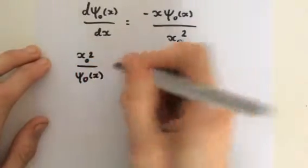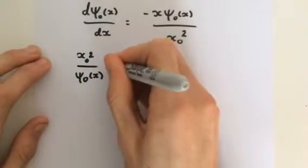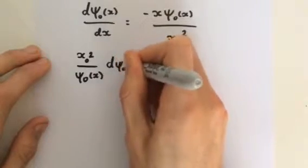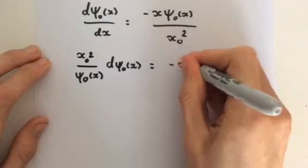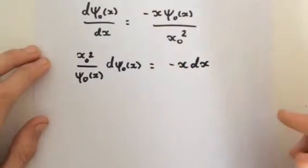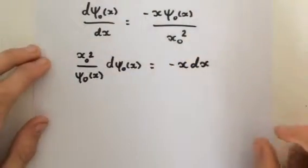psi_0(x) like that, and then we have d psi_0(x) here. Multiply both sides by dx and we have negative x dx. So we separated the variables on two sides of the equation.